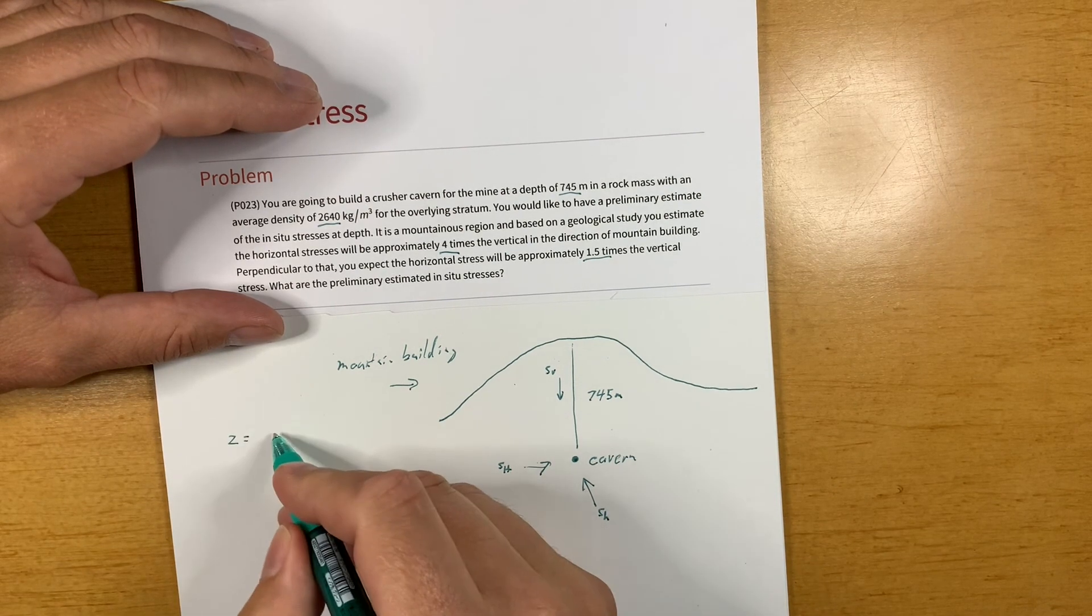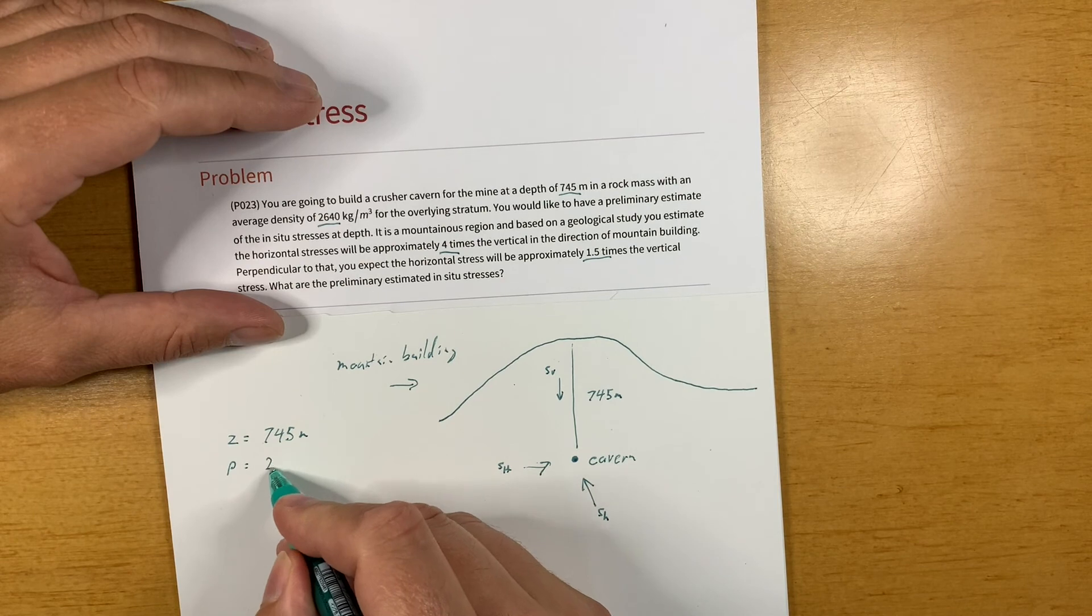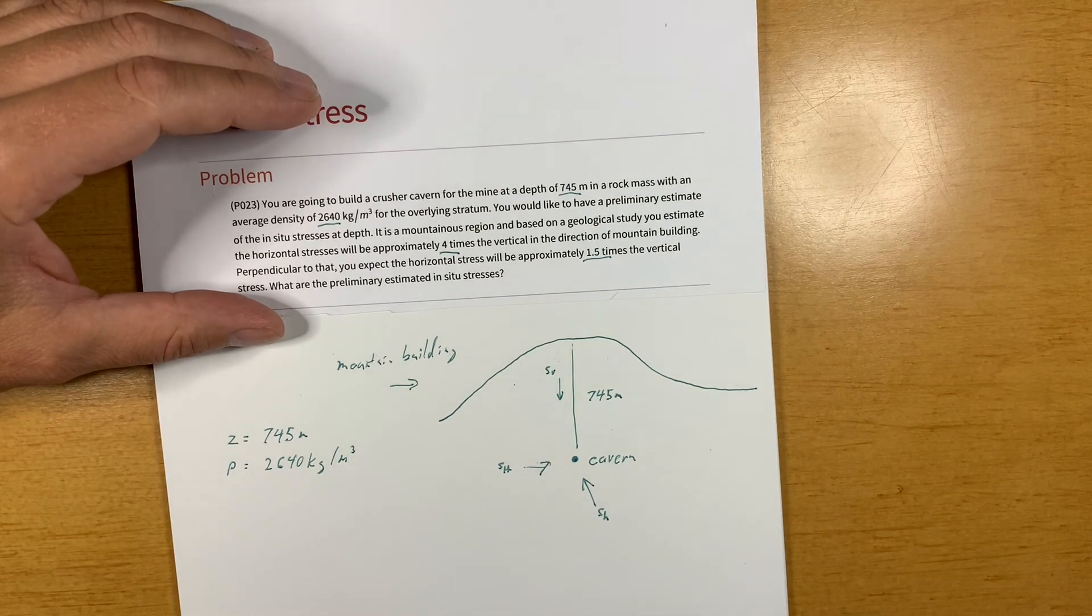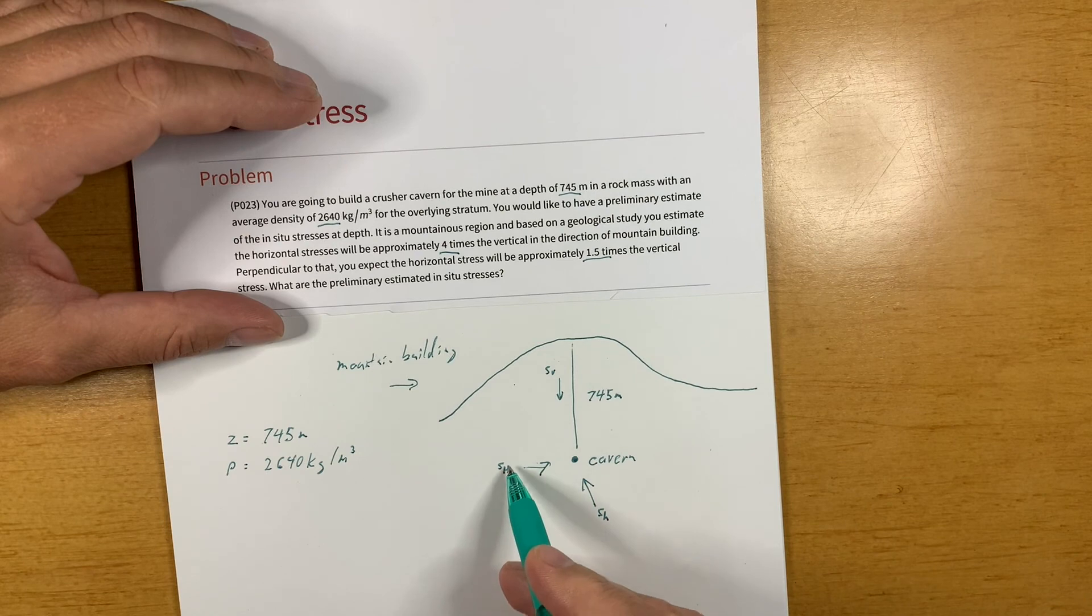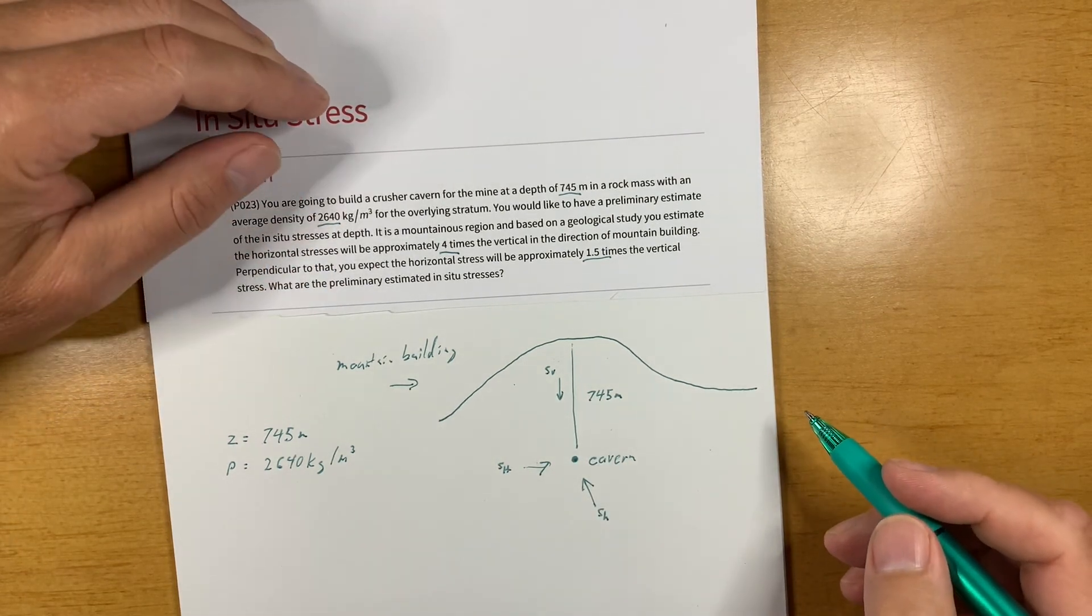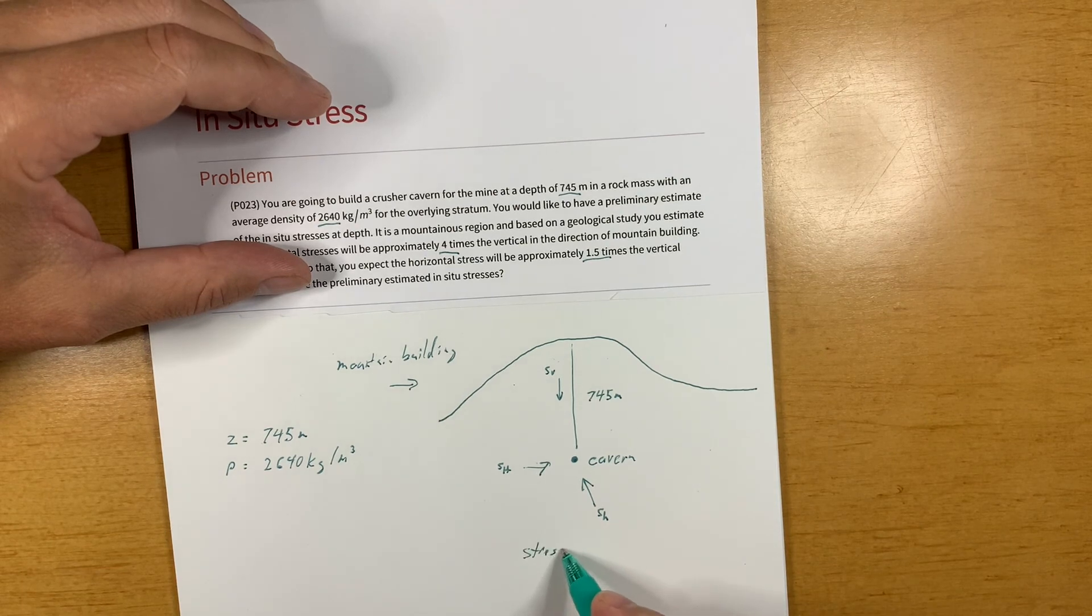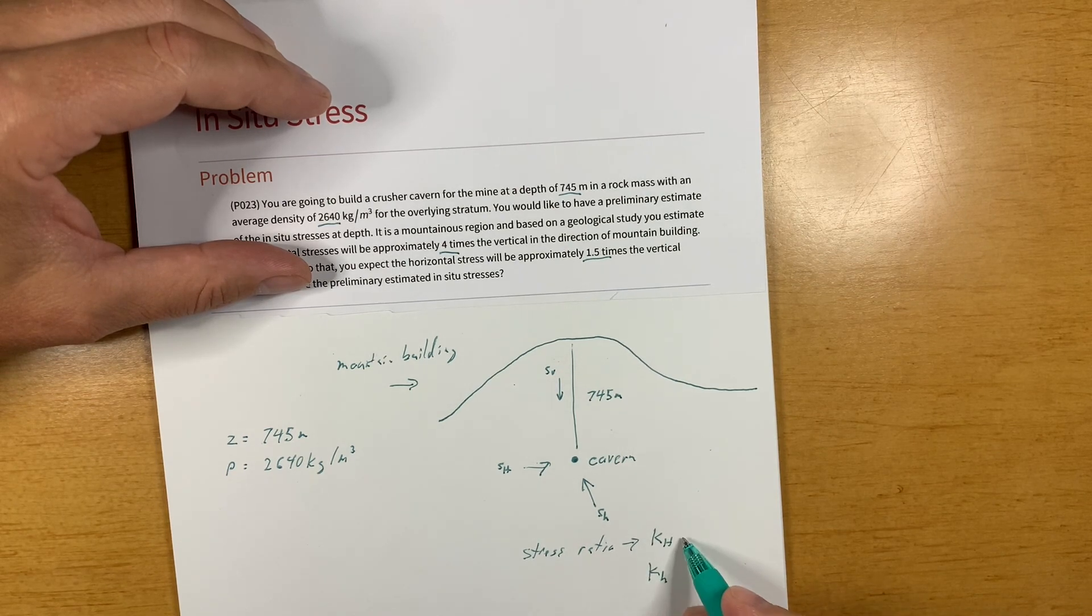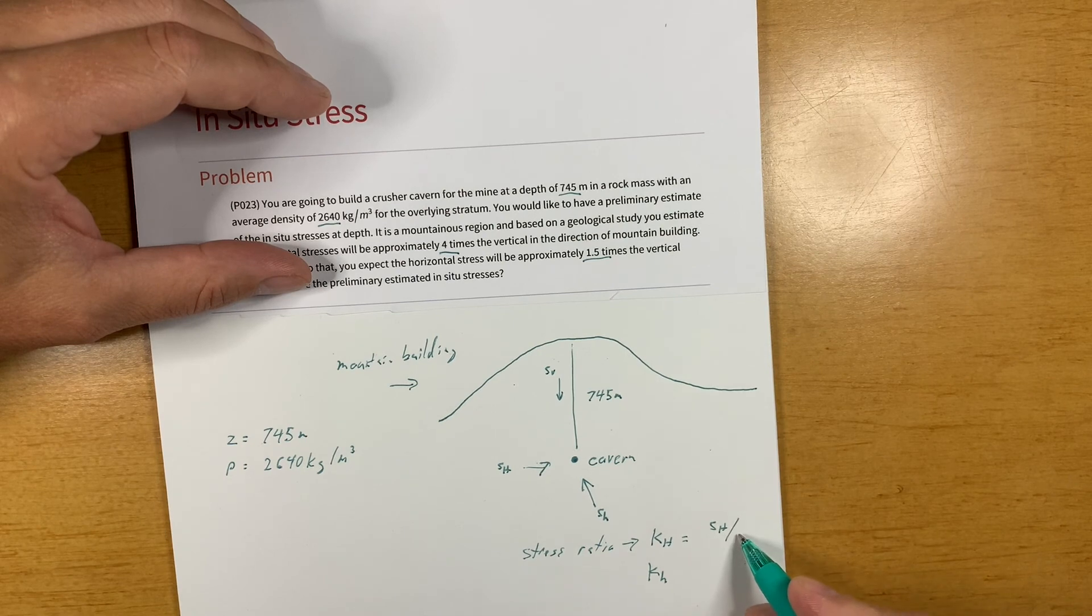We know that the depth is 745 meters, we know that the density is 2640 kilogram per meter cubed average. And now we know that in this direction we got S_H is 4 times S_v and we call those in situ stress ratios, so we have the stress ratio K right. And we'll have two of them, one for the maximum and one for the minimum, and it's the ratio of the horizontal stress to the vertical stress.